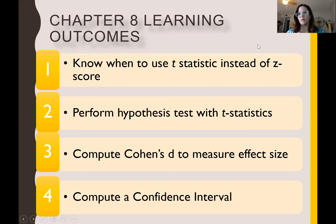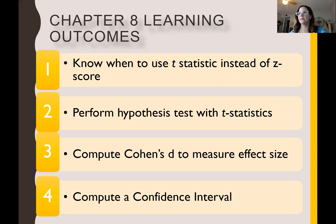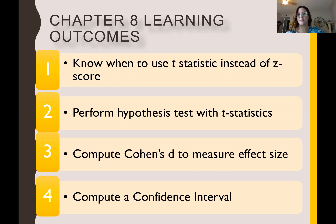With T tests, we're going to learn some specific things. First and foremost, we're going to know when we would use a T statistic instead of a Z score or Z statistic. There are different statistics throughout the course used for different things. We're going to learn how to test a hypothesis using the T statistic, how to compute effect size for a T statistic, and something completely new called a confidence interval. A lot of the information is the same, just reframed depending on our need for testing a hypothesis.